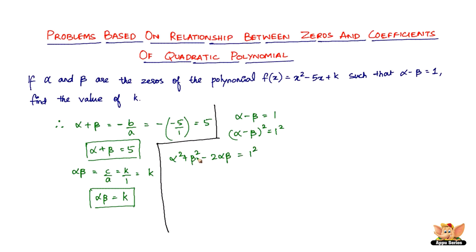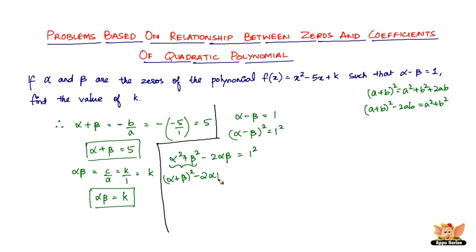Expanding (alpha - beta)² gives alpha² + beta² - 2·alpha·beta = 1. Now, alpha² + beta² can be rewritten using the identity: (a + b)² = a² + b² + 2ab, so a² + b² = (a + b)² - 2ab. Similarly, alpha² + beta² = (alpha + beta)² - 2·alpha·beta.